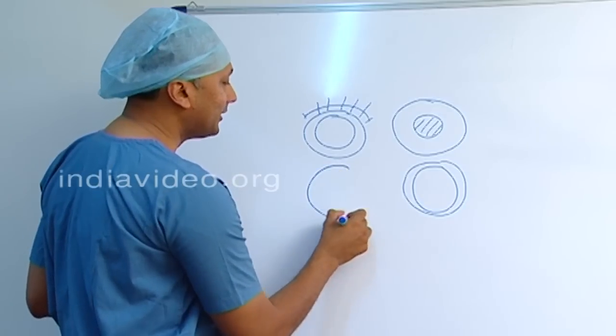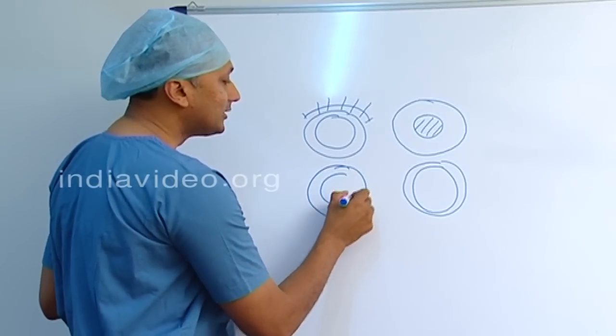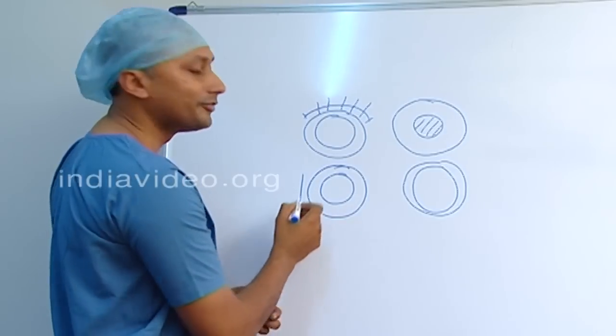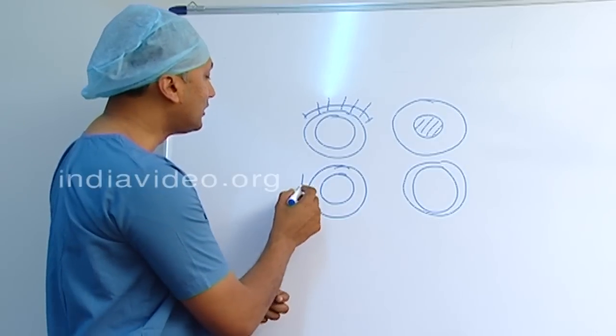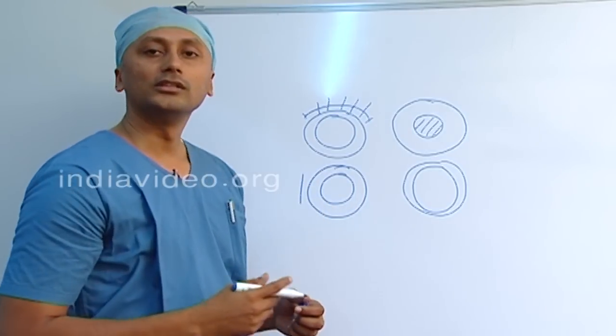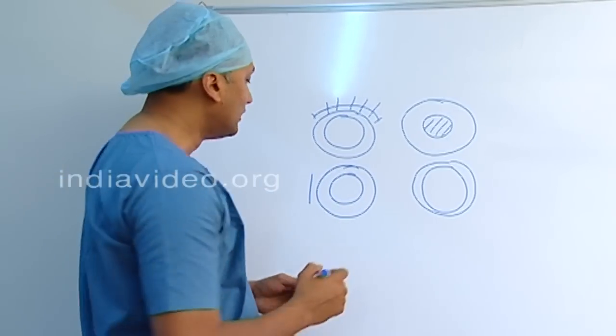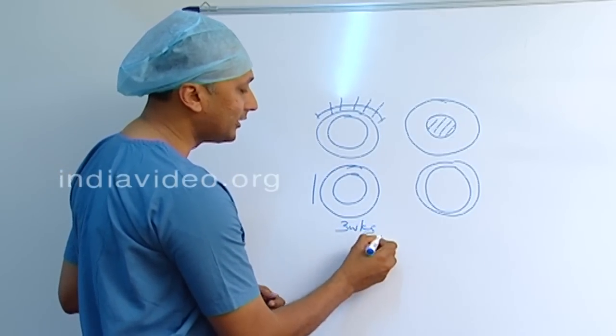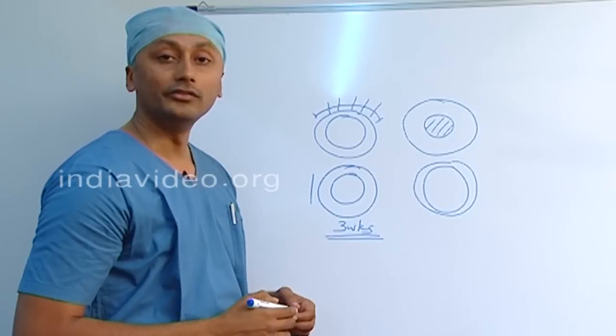The next advancement that came was small incision cataract surgery where the incision was reduced to 5 millimeters. Since it is 5 millimeters, it does not require sutures. But such a large incision requires a lot of time to heal, so a person that undergoes SICS has to rest for 3 weeks.